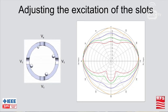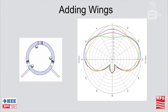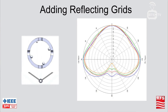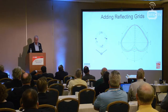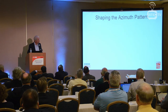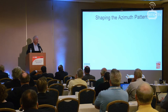You can adjust the excitation on the slots — the front and back slots can have different levels of excitation. The yellow pattern is omnidirectional where they're all at equal power, and the shape changes as we reduce the voltage. We can add wings, generally welded to the pole, which gives a cardioid pattern. You can also add reflecting grids which also give cardioid patterns with more control on front-to-back ratio and beam shaping. So there are quite a few things you can vary to change a pattern on a slot antenna.